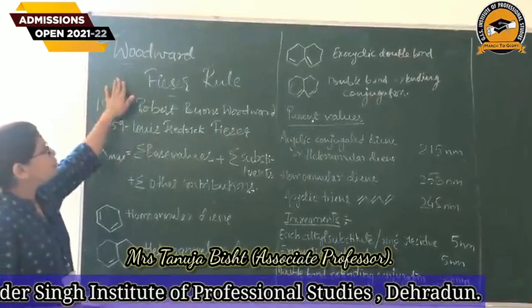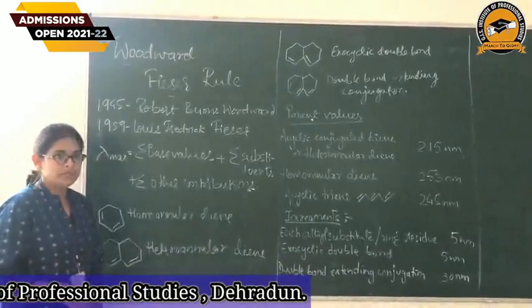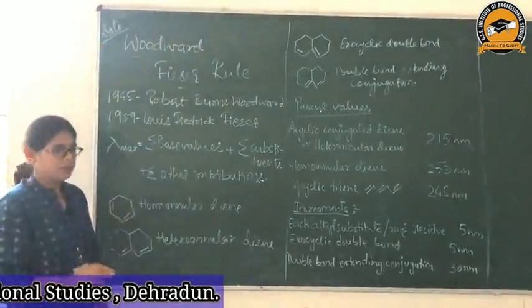Using these rules, we can find out the lambda max, that is the maximum wavelength at which the compound absorbs the UV radiations. So using these rules, we can calculate the lambda max of any compound or any given structure.